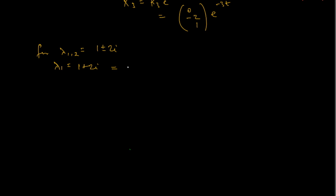Comparing with the form alpha plus i·beta, we have alpha equal to 1 and beta equal to 2. Let's go ahead and find the eigenvector that corresponds to lambda 1.